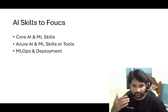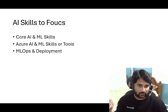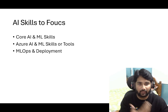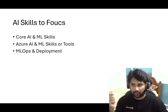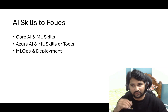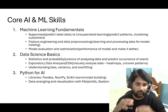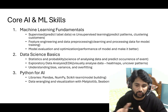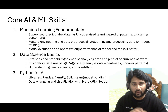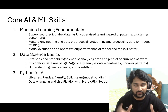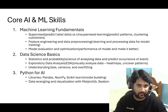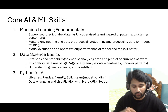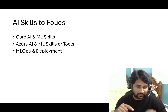MLOps means basically — just like in data engineering when you build pipelines you have a CI/CD process where creation and deployment happen automatically — the same way, even for models you can have MLOps implemented, meaning automatic creation and deployment of a model. Now, when I go deeper, the second category — Azure AI and ML skills — is the most important. The first category is important but not at great depth; high-level theoretical knowledge is fine.